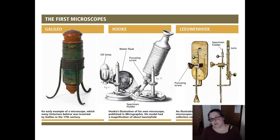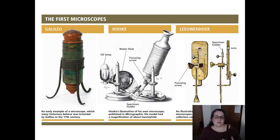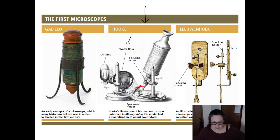As early as the 1600s microscopes were being invented and used to view things smaller than the eye could see. Galileo made a microscope around 1609 — it was more like a magnifying glass. When Robert Hooke came around in the mid-1600s he viewed many different things, drew gorgeous pictures, and published a book called Micrographia. This was his microscope: he had a lamp and a water flask that acted as a magnifier of the light, focusing it to one point, and he had two lenses — one at the end and one where the ocular would be.